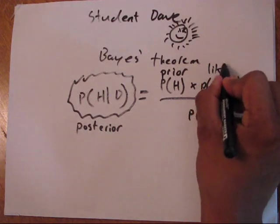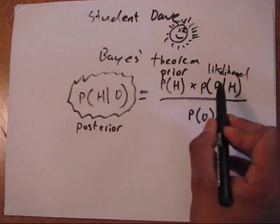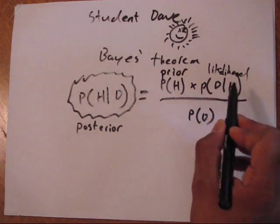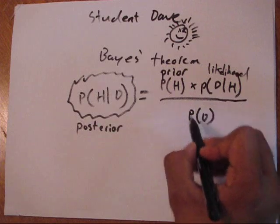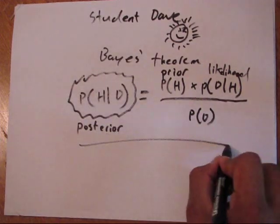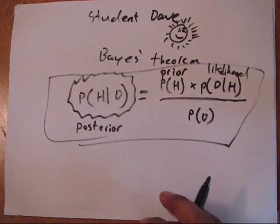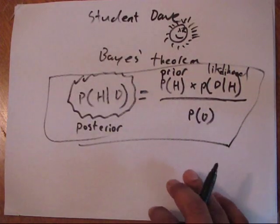This is what's called your likelihood. You multiply the likelihood of the data given the hypothesis times the probability of the hypothesis, divided by the probability of the data, which gives you your posterior. This is Bayes' theorem. This is what everyone's talking about, and it's used in a lot of different domains. We'll give an example here.